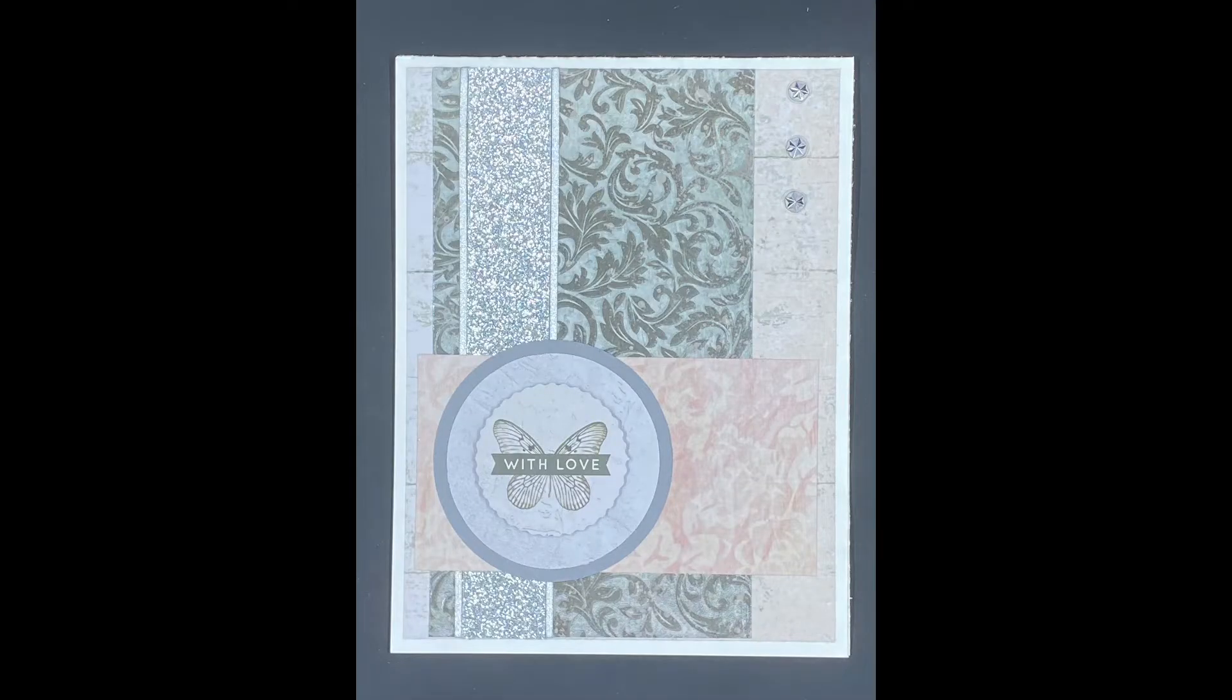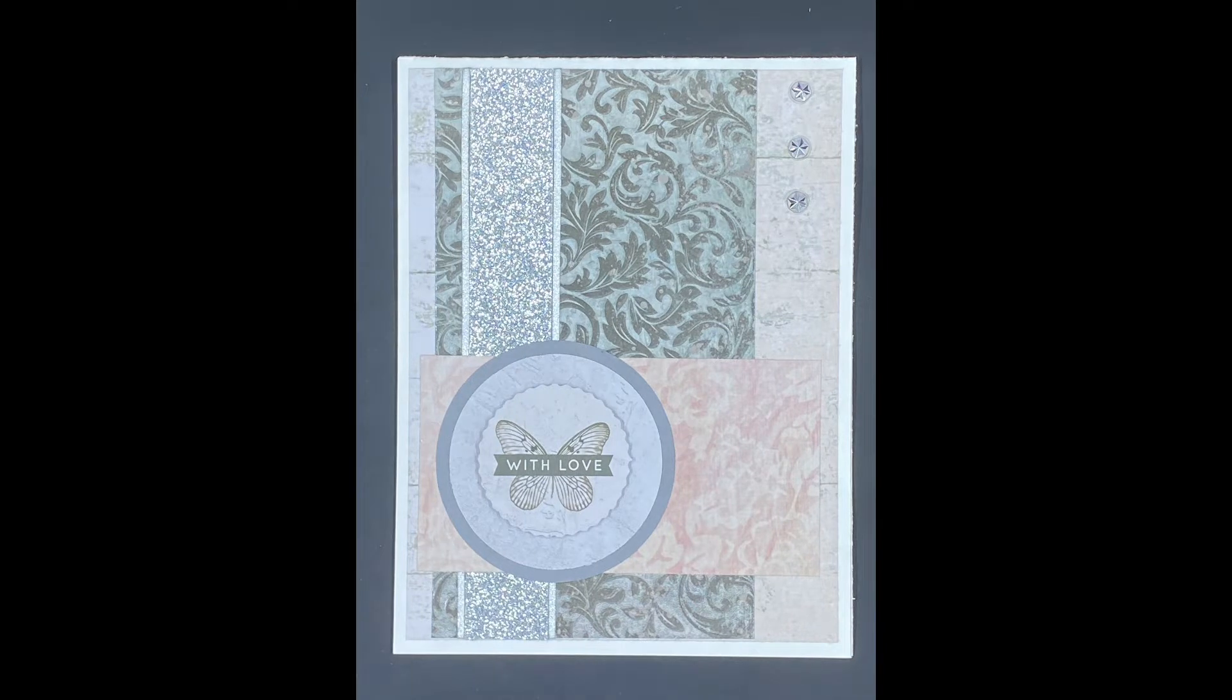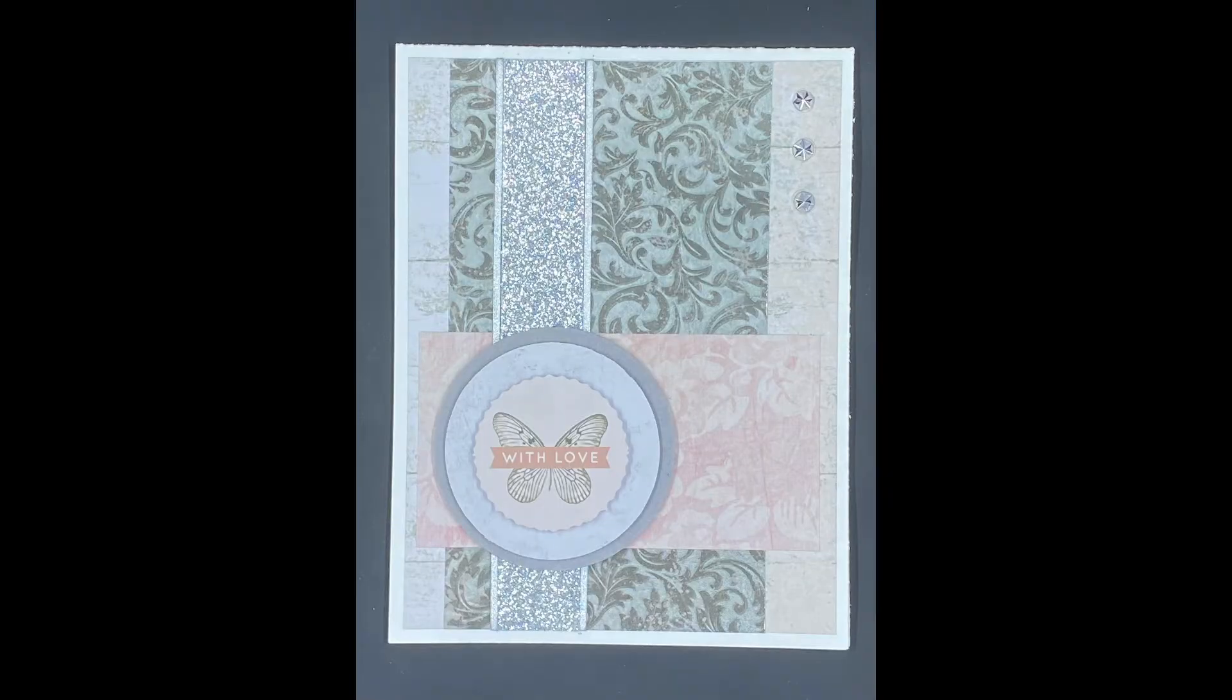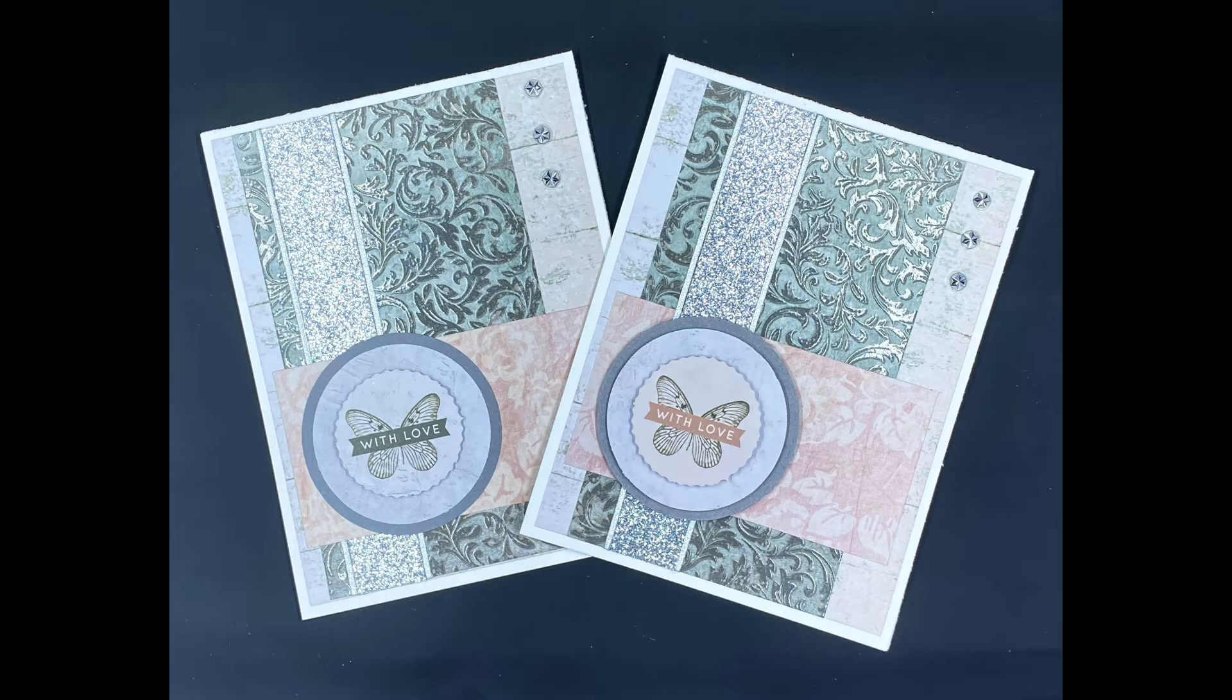So I think with the one where the glitter goes underneath, I probably should have maybe put a little bit of the peel-offs along the pink edge as well. I don't know, there was something about it that I was like, no, I think I like it better underneath. I think it just finishes it off.